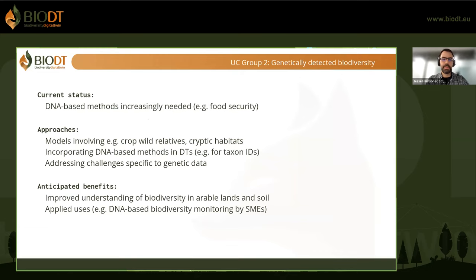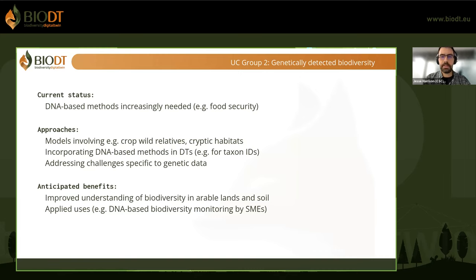In terms of the second group, we have DNA-based methods, which are increasingly needed for, for example, food security. In this use case group, we want to focus on crop wild relatives, especially in cryptic habitats such as soil. The idea is to incorporate DNA-based methods into the digital twins for species identification purposes, addressing challenges specific to handling genetic data. The goal is to develop a better understanding of biodiversity shifts in arable lands and soil. DNA-based biodiversity modeling could also be used by small and medium-scale enterprises.